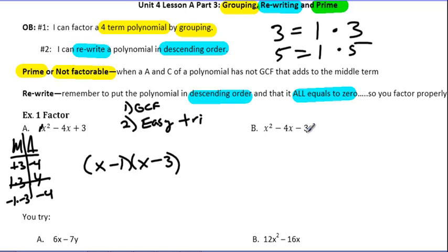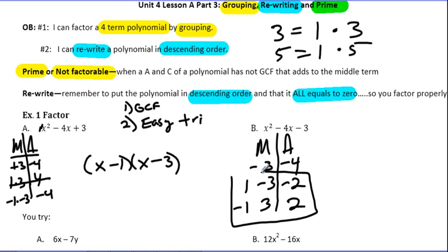Example B, similar looking problem, but now the three is negative. And let's see what happens here. First of all, we look for a GCF. Once again, there is no GCF. We need to multiply to get to negative three. We need to add to get to negative four. So factors of negative three are one and negative three, or negative one and positive three. That's it. That's the only way we get there. So one minus three is negative two, or we could say one plus negative three, if you prefer. And negative one plus three is positive two. Neither one of these are going to get me to four.